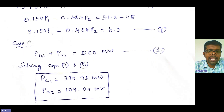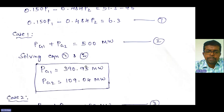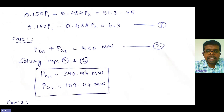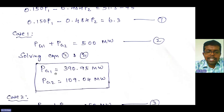Case 1: demand is 500 megawatt, so PG1 + PG2 = 500 MW. Solving these two equations using a scientific calculator, we get PG1 = 390.95 megawatt and PG2 = 109.04 megawatt.